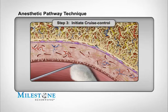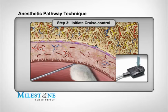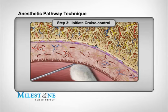Step 3: Initiate cruise control by depressing the foot pedal and counting three audible beeps. After the third beep, the STA system will announce the word "cruise." Upon hearing this announcement, remove your foot from the top of the foot control pedal. You will find that the STA system will continue to beep, indicating anesthetic solution is continuing to flow. The technique of allowing anesthetic to contact and diffuse through the outer layers of tissues produces a topical anesthetic effect, numbing the surface.